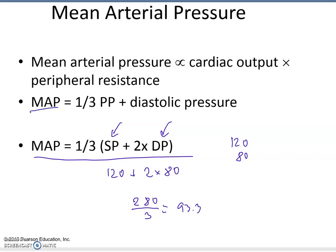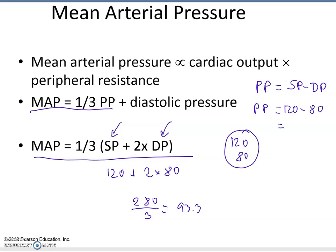You can also calculate MAP using the pulse pressure (PP), which is systolic minus diastolic pressure. With 120 over 80, the pulse pressure is 40 mmHg. Then: one third of 40 (which is 13.3) plus the diastolic pressure of 80 equals 93.3 millimeters of mercury. Both formulas lead to the same result. You need to know these formulas for both lecture and lab.